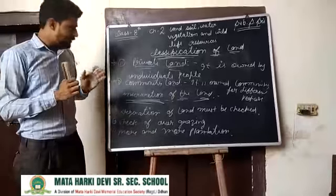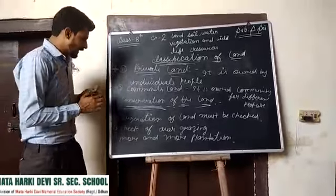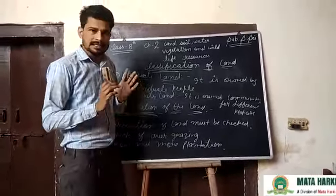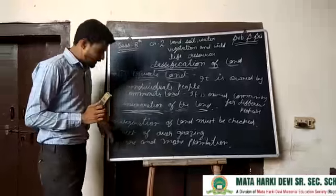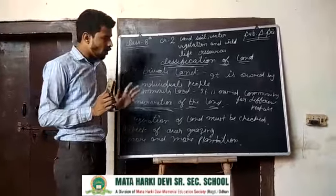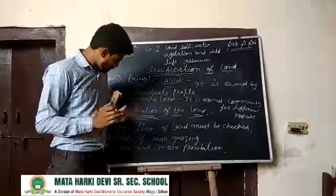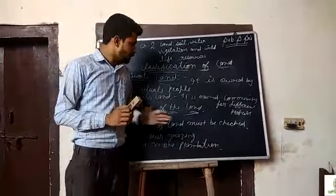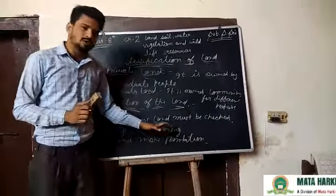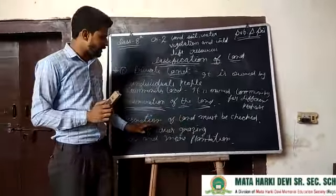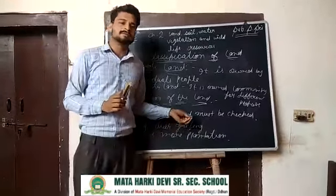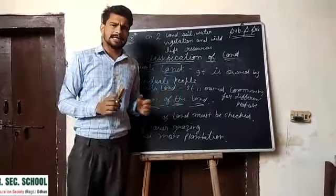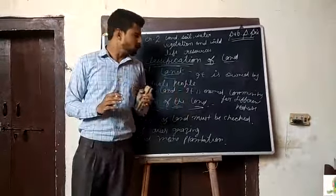First point of conservation of land: degradation of the land must be checked. Second is checking of overgrazing. Third is more and more plantation. These are the most important sectors — we can conserve natural sources of land.